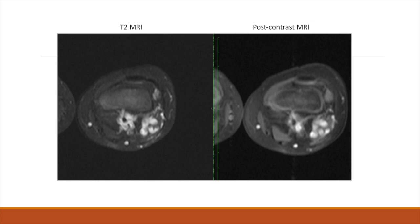As expected, we see an enhancing lesion on T2-weighted MRI, consistent with a vascular malformation. However, in this example, when we look at the post-contrast MRI on the right, we see that the lesion enhances post-contrast. Because our contrast causes the lesion to enhance, we know this is a venous malformation.